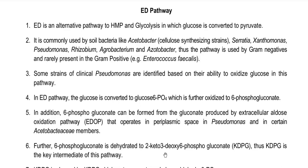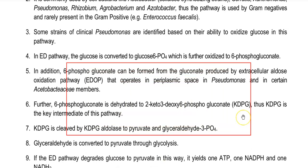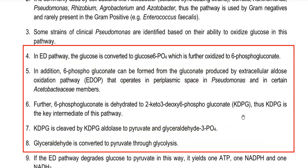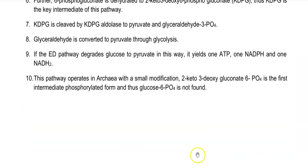Some strains of clinical Pseudomonas are identified based on their ability to oxidize glucose via this pathway. In summary, glucose is converted into glucose-6-phosphate, then into 6-phosphogluconate, then into KDPG, which is cleaved to produce pyruvate. This pathway also operates in archaea with a small modification: instead of glucose-6-phosphate as the starting compound, 2-keto-3-deoxy-gluconate-6-phosphate serves as the first phosphorylated intermediate.